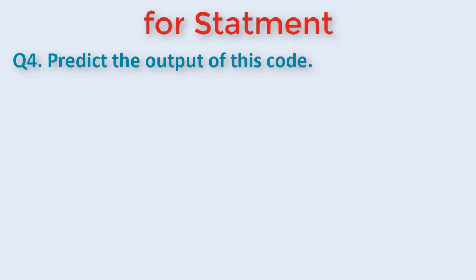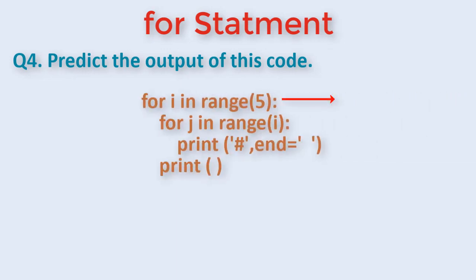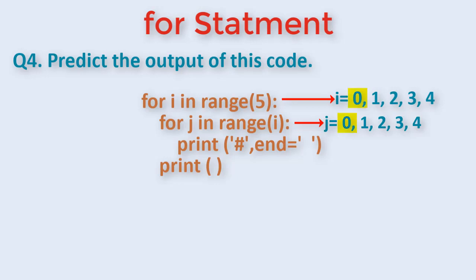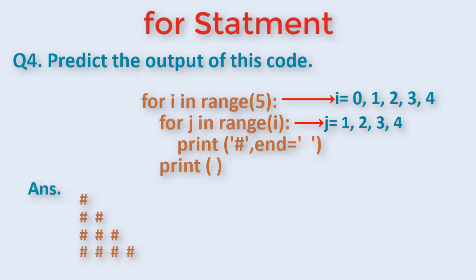Let's see another question which has a nested loop — predict the output of this code. The outer loop executes 5 times from 0 to 4. The inner loop executes till i, meaning it changes its value to 0, 1, 2, 3, and 4. Since 0 to 0 will never execute, it will execute for 1, 2, 3, and 4 times respectively. The inner loop prints hash with a space as end, and every time it comes out of the inner loop, it moves to the next line due to the empty outer print statement. So it prints a pattern with 1 hash in the first line, then 2 in the second, 3 in the third, and 4 in the fourth.